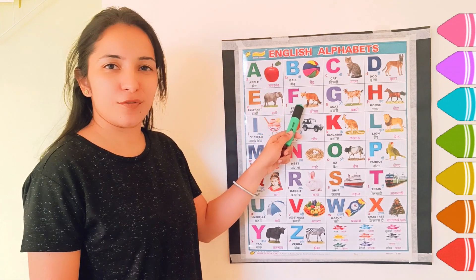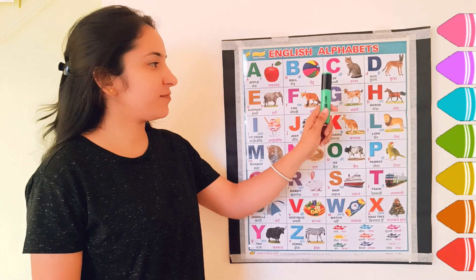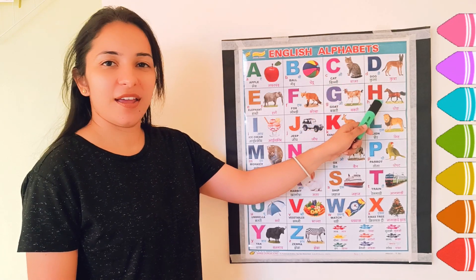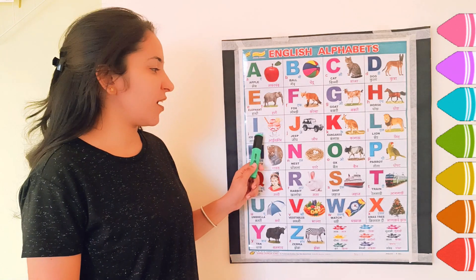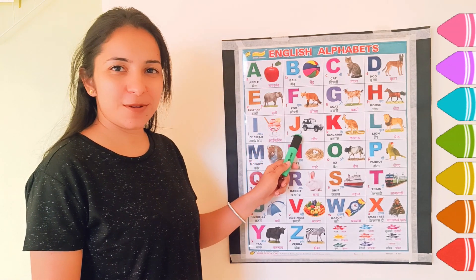F, F for fox. G, G for goat. H, H for horse. I, I for ice cream. J, J for G.